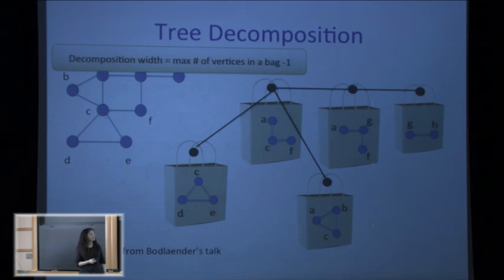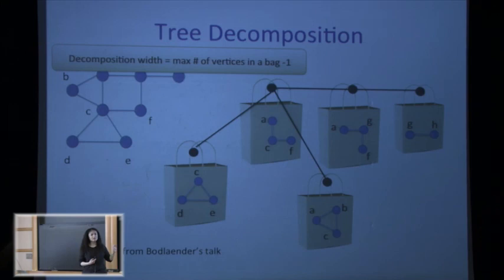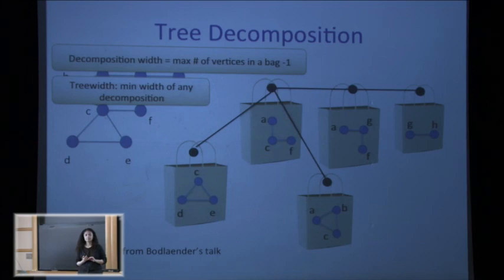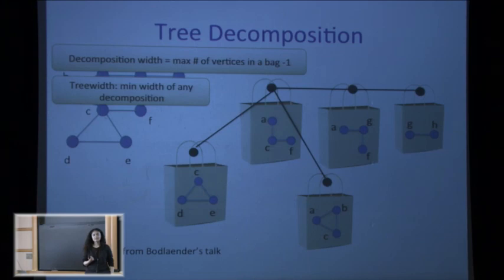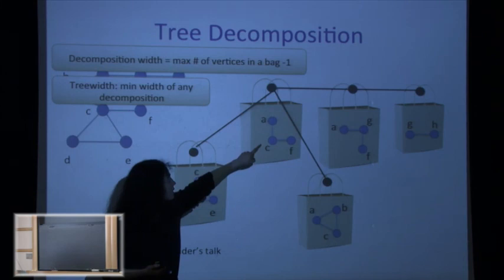Given a valid tree decomposition, the width of this decomposition is the largest number of vertices in any bag minus one. The minus one is there to ensure that the tree-width of a tree is one — it's a normalizing convention. The tree-width of a graph is the smallest width over all decompositions. For this decomposition the width is two because we have at most three vertices in any bag.